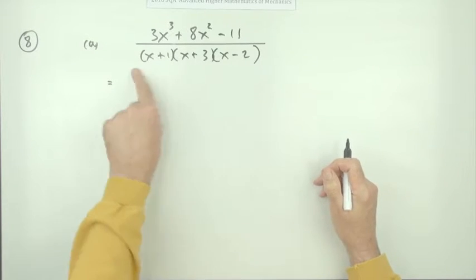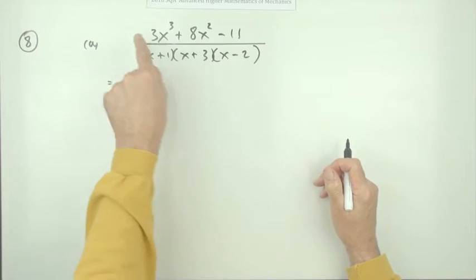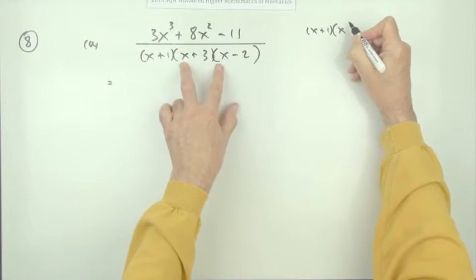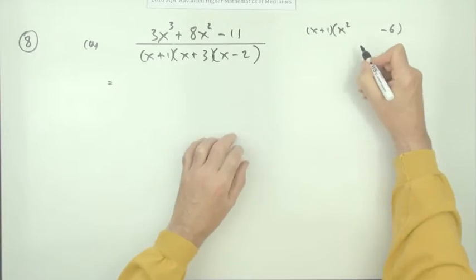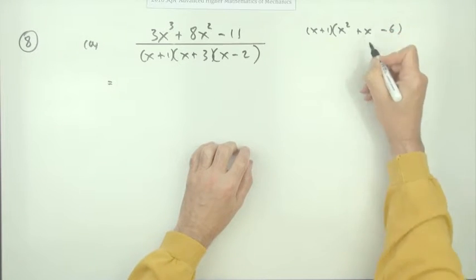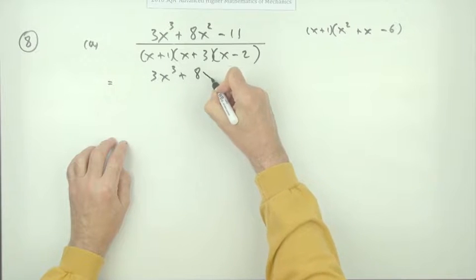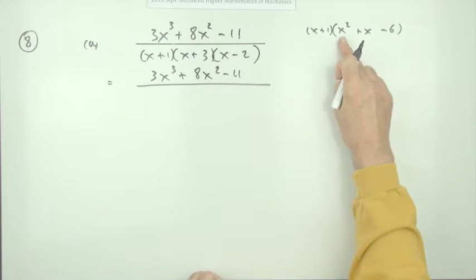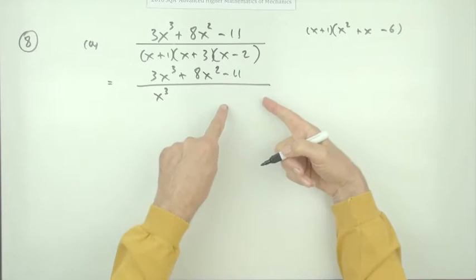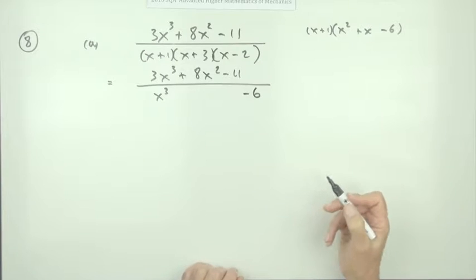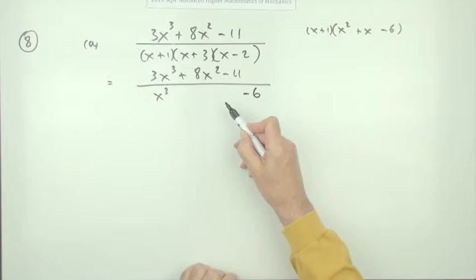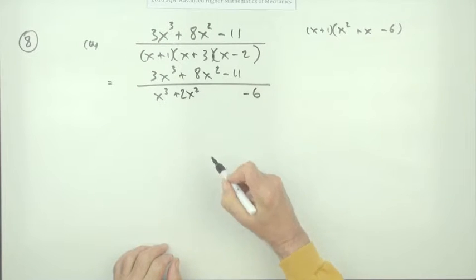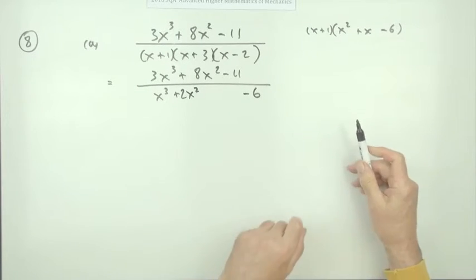The first thing you'd have to do is multiply that out. I've got x plus 1 times—if I multiply this first—that'll be x squared, that'll be minus 6, and that'll be plus x, plus 3 minus 2. Then I can multiply it back down here, so I've got 3x cubed plus 8x squared minus 11, all over... Now multiplying that out, there's only one way of getting the x cubed, and that's the x times the x squared, so that's just x cubed. The one way of getting the number is the 1 times the 6, so I'll have a minus 6. But when it comes to the other pair, the x squared and the x's, there's a couple. For x squared, I've got x squared plus x squared is 2x squared, and for the x's, I've got minus 6 plus 1, which is minus 5x.